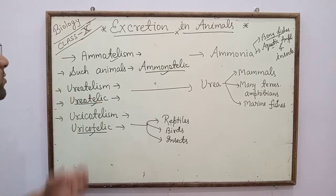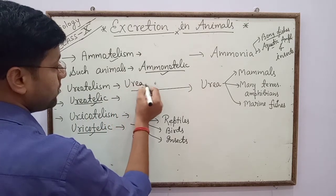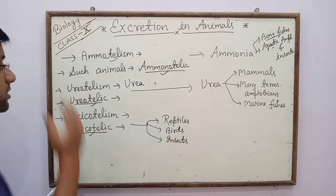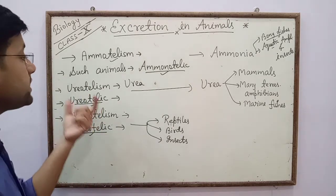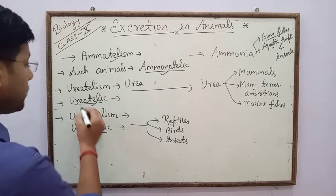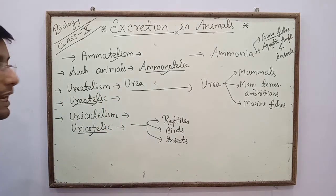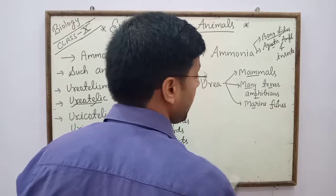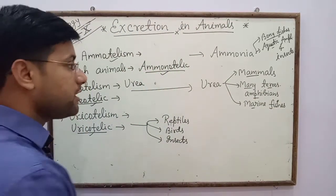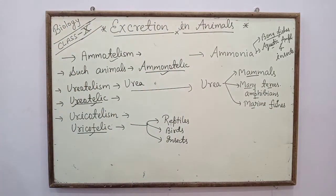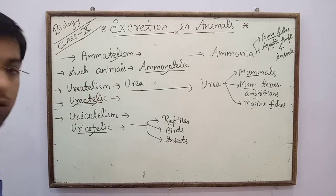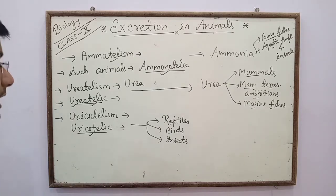Next is ureotelism. The process of excretion of urea as a toxic substance is called ureotelism, and animals that excrete urea as their excretory product are called ureotelic animals. Examples include mammals, many terrestrial amphibians, and marine fishes, because they excrete only urea by the process of ureotelism.